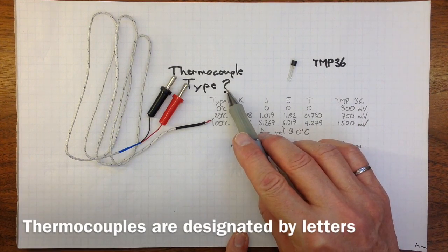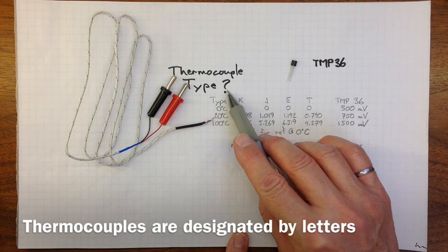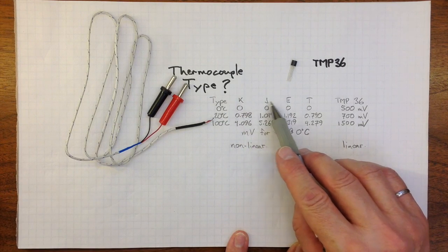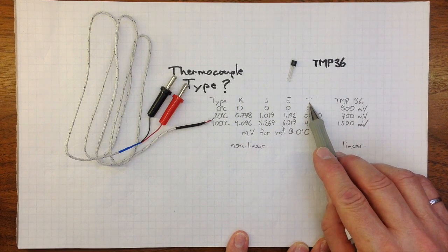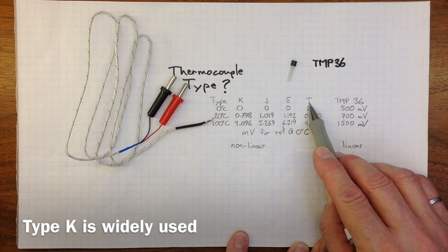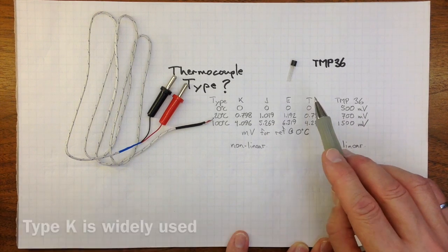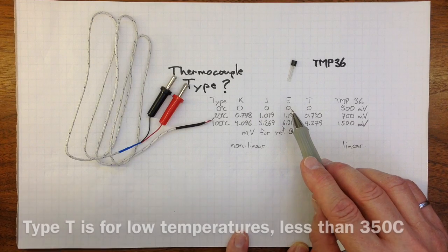We're not sure what type of thermocouple this is. It could be a type K or a J or an E or a T, and you can find out more about those from your textbook or from looking up the Omega website through D2L.